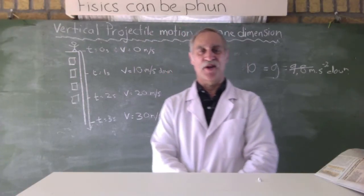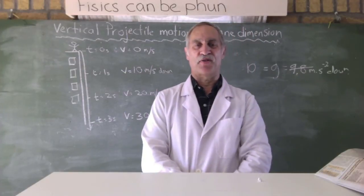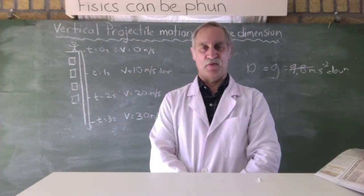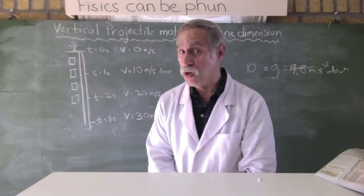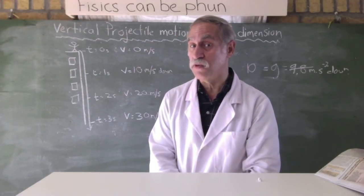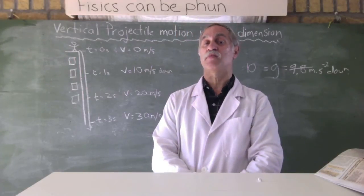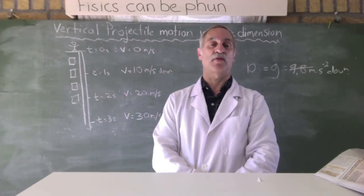So, that was simple enough. So, after three seconds, our velocity would be 30. After four seconds, it would be 40. After five seconds, it would be 50. After six seconds, it would be 60 meters per second down. That's what the velocity would be.